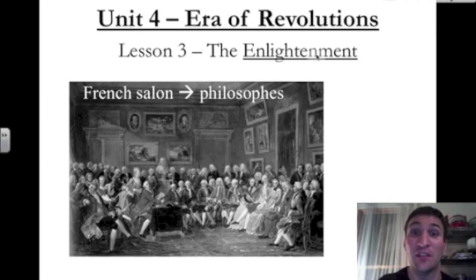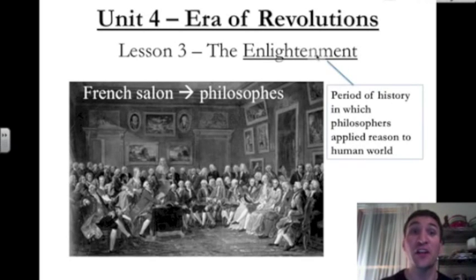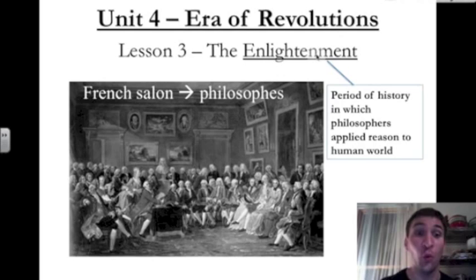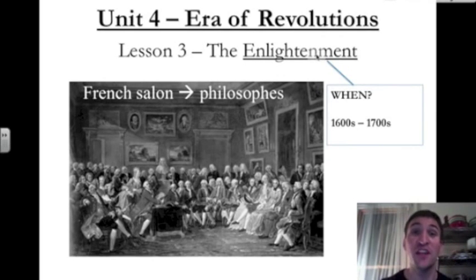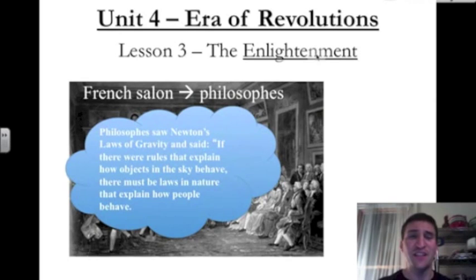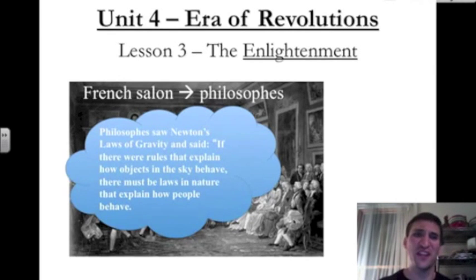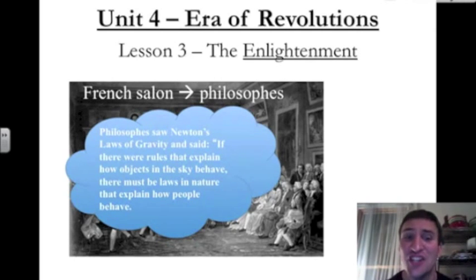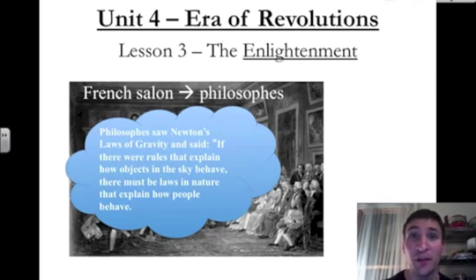So what is the Enlightenment? The Enlightenment is a period in history in which philosophers applied reason to the human world. It took place in the 1600s and the 1700s in Europe. These philosophes saw Newton's law of gravity and said to themselves, if there were rules that explain how objects in the sky behave, then there must be laws in nature that explain how people behave.